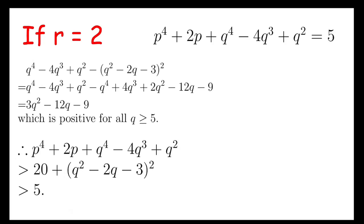And the quartic polynomial would also be larger than that perfect square. This inequality would hold for all q at least 5, for all primes q at least 5. And that expression is clearly over 5.